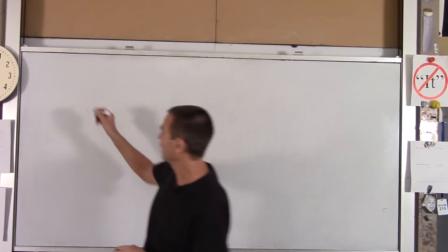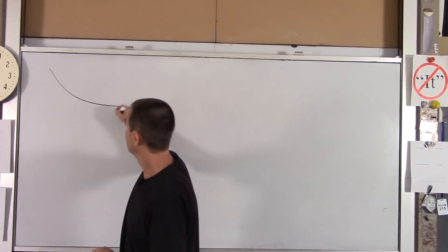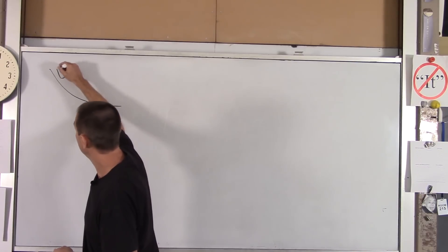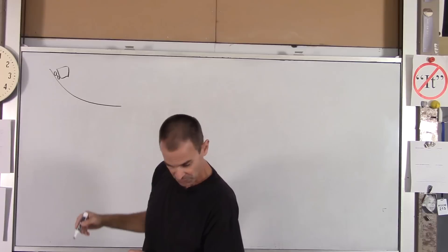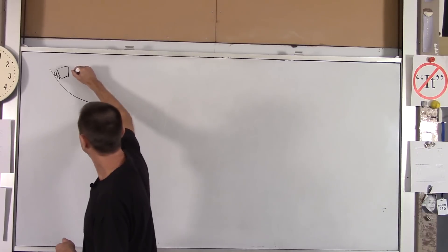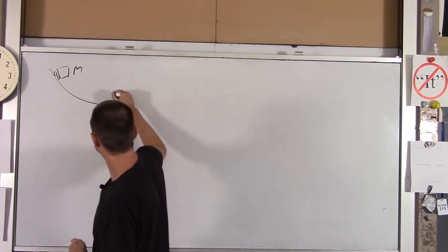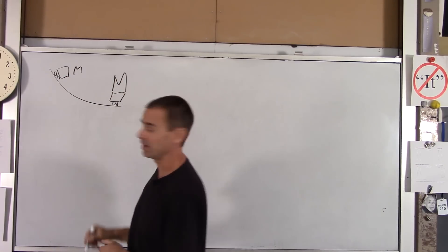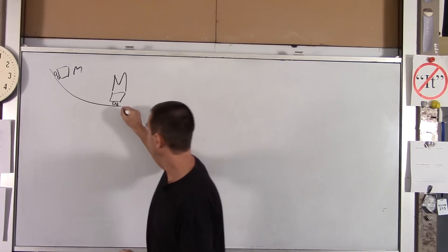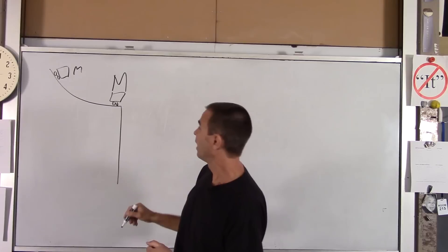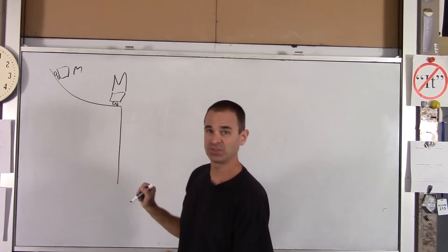So a real simple one. I've got a ramp. I've got a little car on the ramp, on wheels. We'll call that little m. And he's going to knock into a cart that has a mass big M. This is on a table. It's going to be an elastic collision.